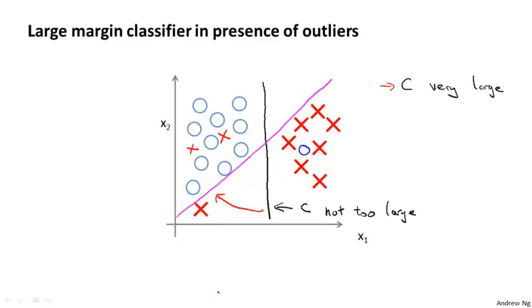If C were very large, then the SVM will change the decision boundary from the black to the magenta one. But if C were reasonably small — not too large — you still end up with the black decision boundary. And if the data were not linearly separable, the SVM will also do the right thing. This picture of a large margin classifier gives better intuition only for the case when C is very large. C plays a role similar to one over lambda, where lambda is the regularization parameter. When applying SVMs in practice, when C is not remarkably large, it can better ignore a few outliers and do reasonable things even if your data is not linearly separable.